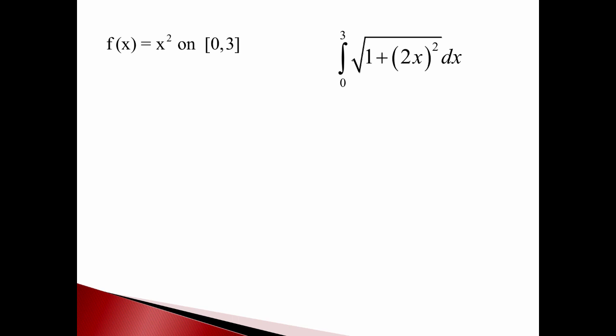The derivative of x squared is 2x. So I'll have the square root of one plus 2x, all that in parentheses squared, dx. It's just that easy. We can even do this sideways.